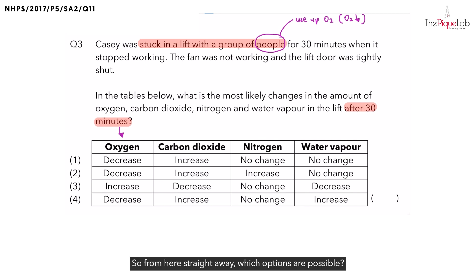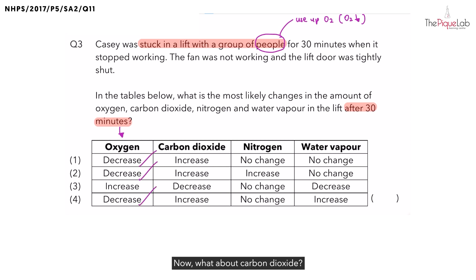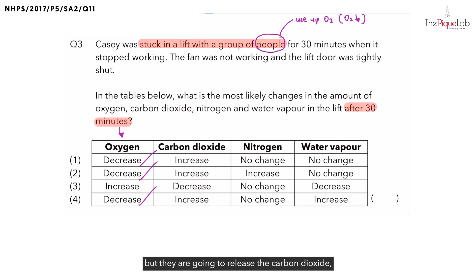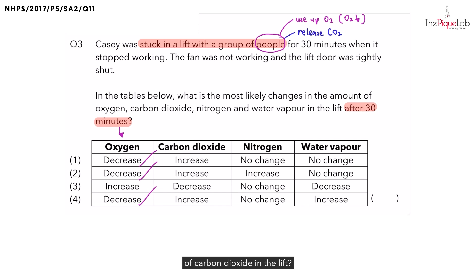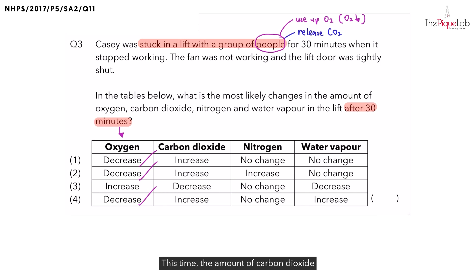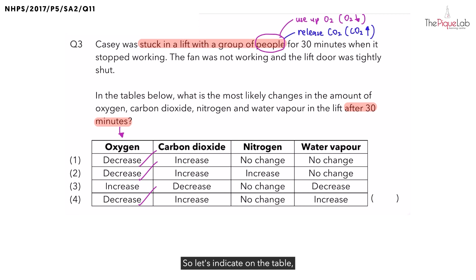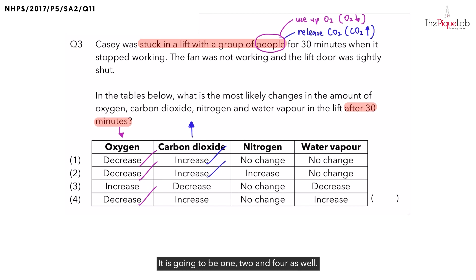From here, which options are possible? We know it is 1, 2 and 4. Now, what about carbon dioxide? The people inside are going to use up oxygen, but they are going to release carbon dioxide. So the amount of carbon dioxide is going to increase. Let's indicate that on the table — which means options 1, 2 and 4 are still possible.